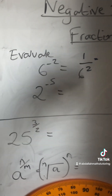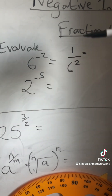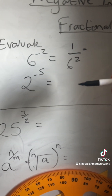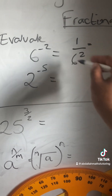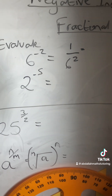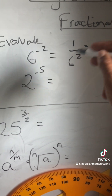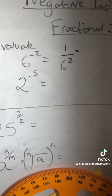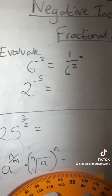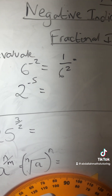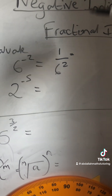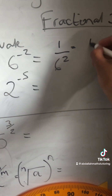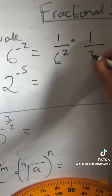So the negative power does the 1 over, and the power just sticks with the number and obviously becomes positive at this stage, because the negative has now been dealt with by the 1 over. So 1 over 6 squared is going to be 1 over 36.